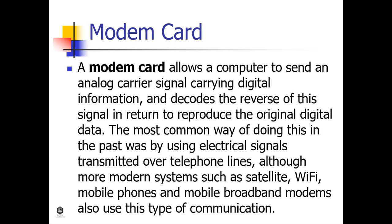Next, the modem card. A modem card allows a computer to send an analog carrier signal carrying digital information and decodes the reverse of this signal in return to reproduce the original digital data. The most common way of doing this in the past was by using electrical signals transmitted over telephone lines, although more modern systems such as satellite, Wi-Fi, mobile phones, and mobile broadband modems also use this type of communication. Wireless modems can be embedded inside of a device or be external to it, and can be locked to only receive certain types of frequency signals, for example, only those from one particular network provider.